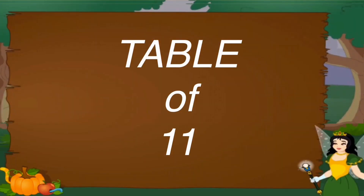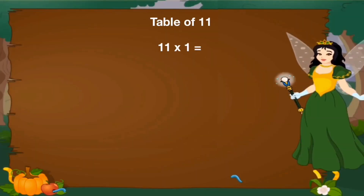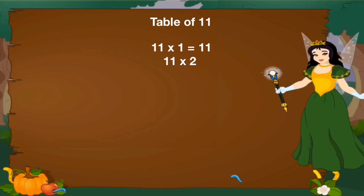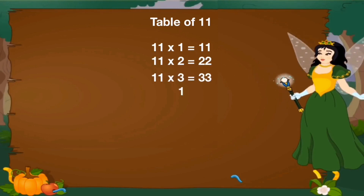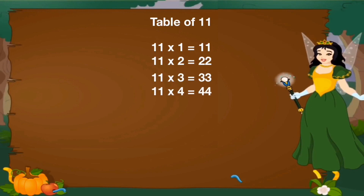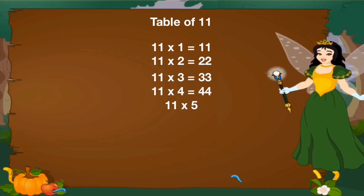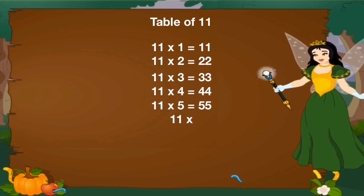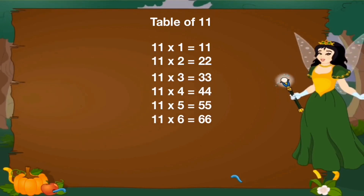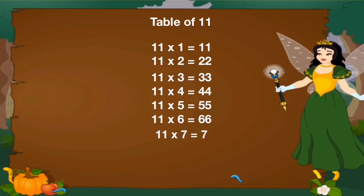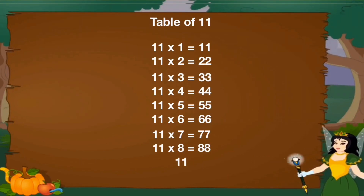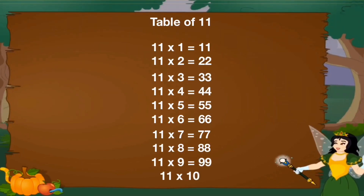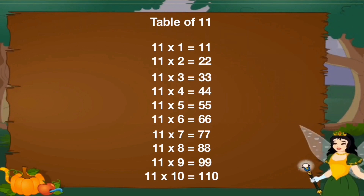Let's revise table of 11. 11 1's are 11, 11 2's are 22, 11 3's are 33, 11 4's are 44, 11 5's are 55, 11 6's are 66, 11 7's are 77, 11 8's are 88, 11 9's are 99, 11 10's are 110.